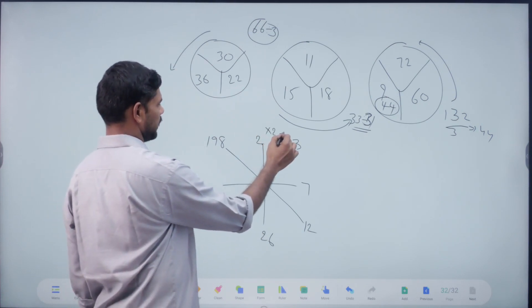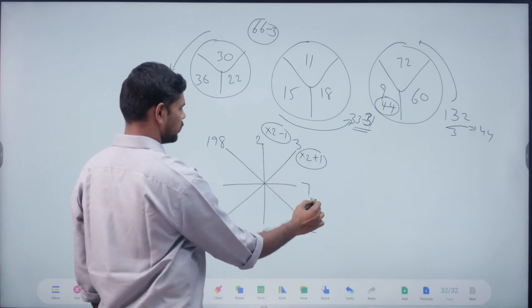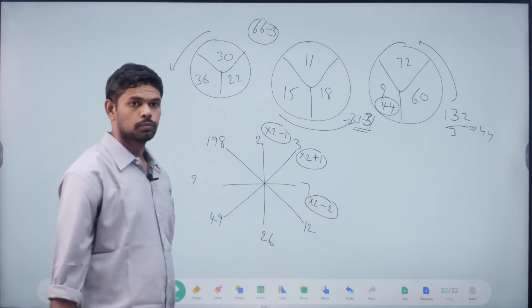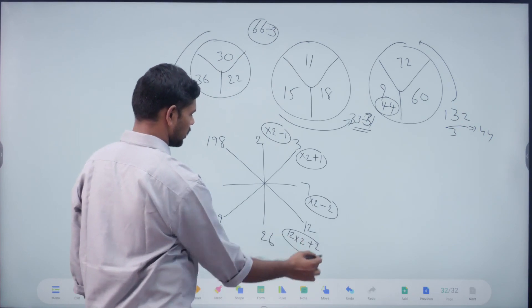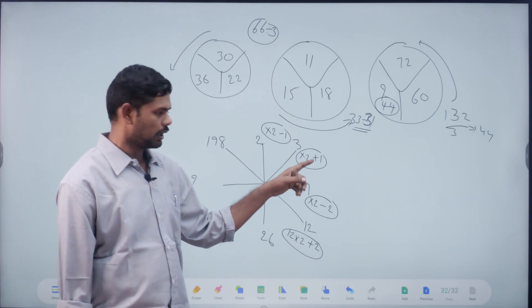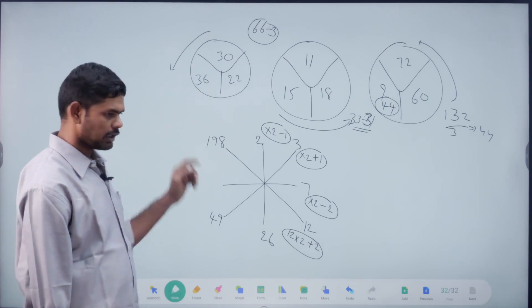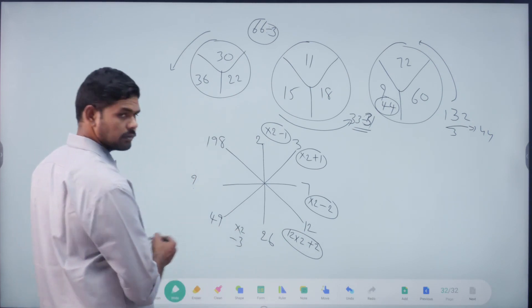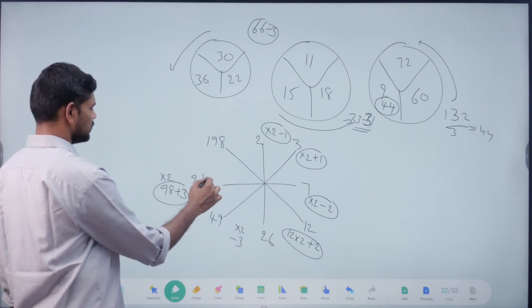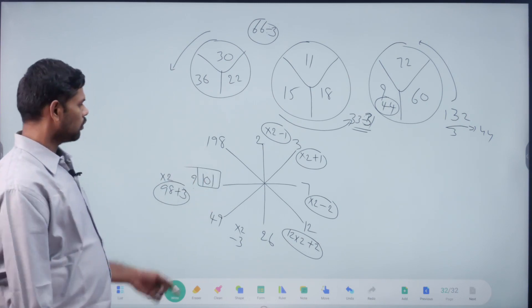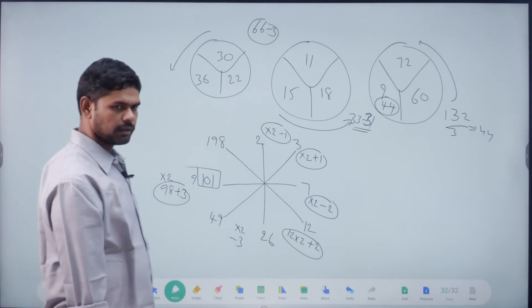2 into 2 minus 1 = 3. 3 into 2 plus 1 = 7. 7 into 2 minus 1 = 13. 12 into 2 plus 2 = 26. Minus 1 plus 1, minus 2 plus 2. Next minus 3 plus 3, minus 4. So 26 into 2 = 52. Minus 3 = 49. 49 into 2 = 98. Plus 3. Answer is 101. 102 into 2 minus 4 = 198. Pattern right. Next clear, okay.